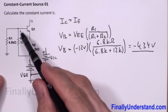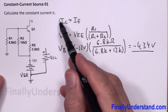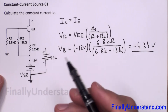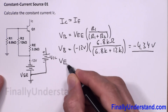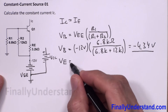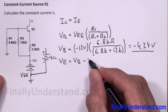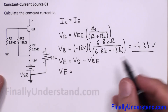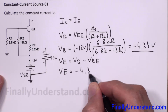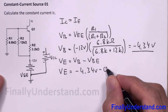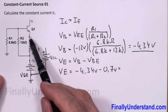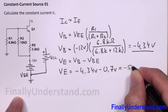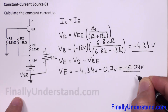We're not looking for VB itself — we need IC, which is approximately equal to IE. To find IE, I need the voltage across resistor RE. First I find VE, the voltage at the emitter: VE equals VB minus VBE. So VE equals negative 4.34 volts minus 0.7 volts, giving VE equal to negative 5.04 volts.